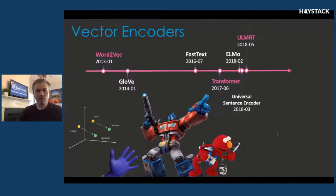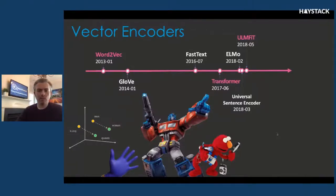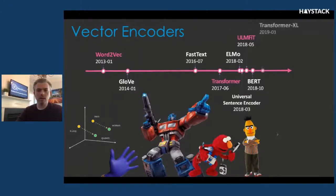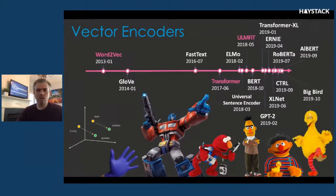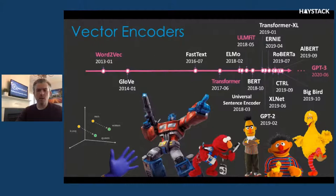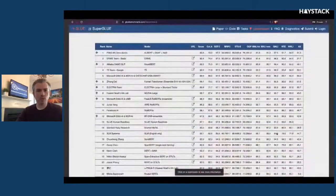ULMfit really made transfer learning popular — the ability to start with a base language model and then retrain only a portion of it based upon the content in your domain. Then of course BERT was the next major breakthrough, which Google has leveraged very heavily. From that point on there's just been an explosion of different models — lots of Sesame Street character-themed names. I haven't even included anything from 2020 other than GPT-3, which just came out at the beginning of June, which we'll talk about in just a little bit. You can see the GLUE benchmark leaderboard, which measures the success rates of each of these models — the field is just growing by leaps and bounds.